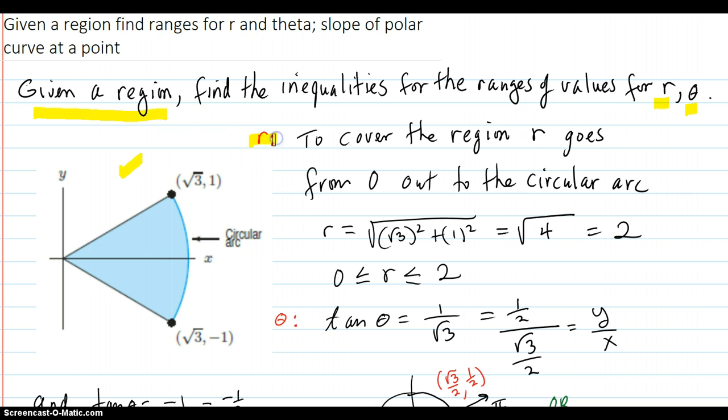First, r. To cover this whole region in here, we need the r to go from zero here, and we need it to go and cover all the way out to the edge. So it goes from zero out to the circular arc.